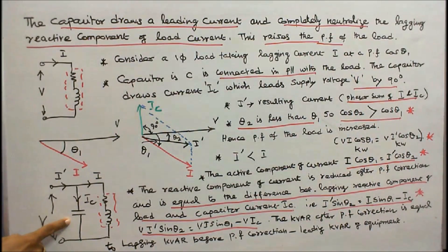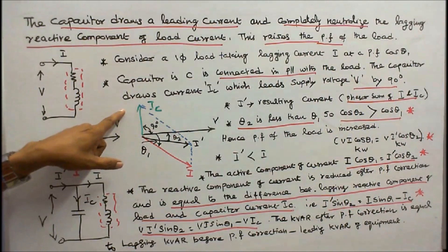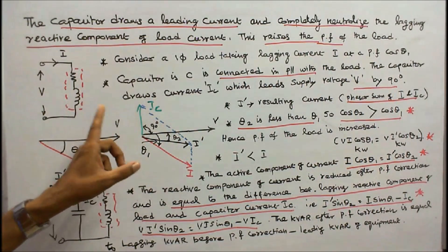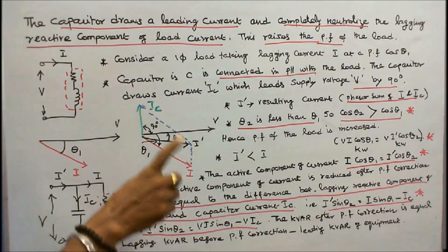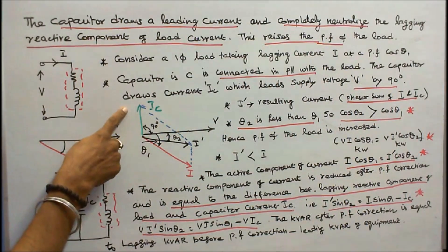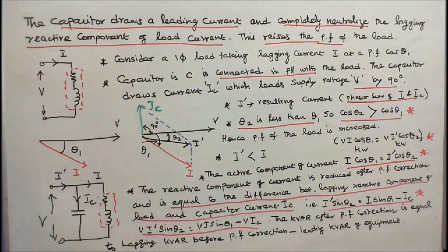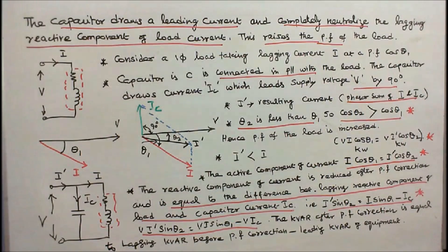Now capacitor C is connected in parallel with the load. The capacitor draws current Ic which leads the supply voltage by 90 degrees — it is an ideal capacitor. I dash is the resulting current, which is the phasor sum of I and Ic. Here theta 1 is the angle between V and I, and theta 2 is the angle between V and I dash. Since theta 2 is less than theta 1, cos theta 2 is greater than cos theta 1, so the power factor of the load is increased.